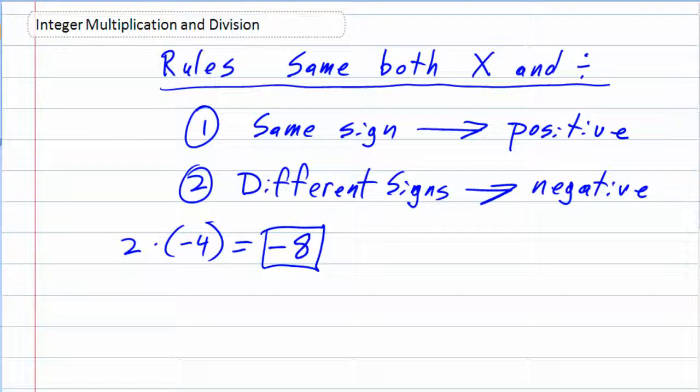Sometimes the signs may be the same. And again, these are the same rules for division. So what if I had a negative 15 divided by a negative 3? Well, negative 15 divided by negative 3, the signs are both negative, which means they're the same.